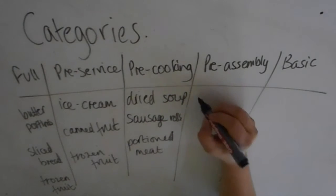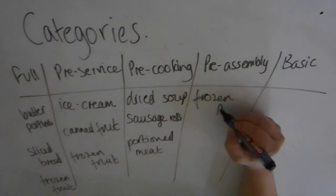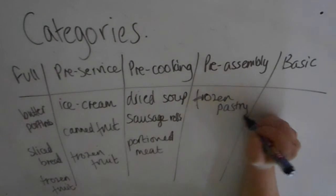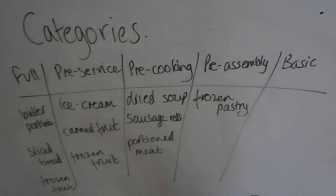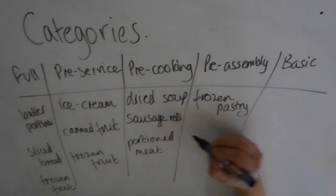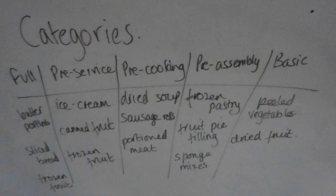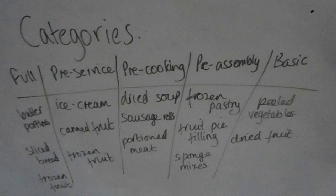Pre-assembly means the preparation has been done but they're not assembled into a final product. Examples include frozen pastry, fruit pie filling, and sponge mixes. Frozen pastry can be pre-rolled or not rolled. You might want to roll that out and fill it with fruit pie filling to make a pie.